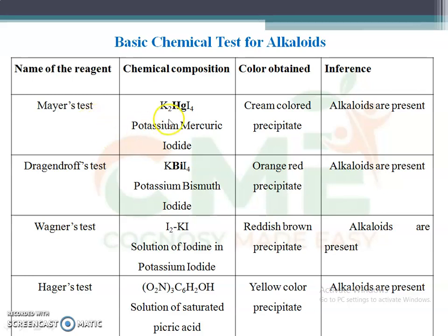The four basic chemical tests are Mayer's test, Dragendroff test, Wagner's test, and Hager's test. In Mayer's test, the reagent is potassium mercuric iodide and it gives a cream color precipitate. Dragendroff test uses potassium bismuth iodide and gives an orange-red precipitate. Wagner's test uses iodine in potassium iodide and produces a reddish-brown precipitate. Hager's test uses a saturated solution of picric acid and gives a yellow precipitate.